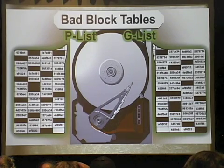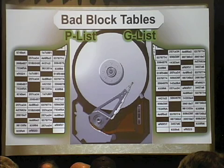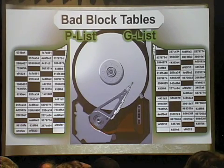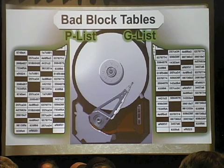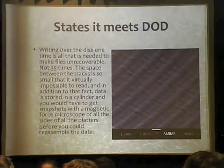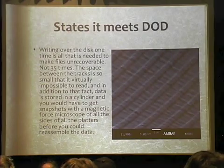The secure erase doesn't delete the GList. Basically, what it does is wipe those sectors anyway below that level, so the GList will still say it's a bad sector because it was written to at one time and came back with ECC. You really don't want to use those sectors, but you also don't want content there, and you want to get rid of any content that is there. The constant issue people keep talking about is: how many times do I have to wipe it?